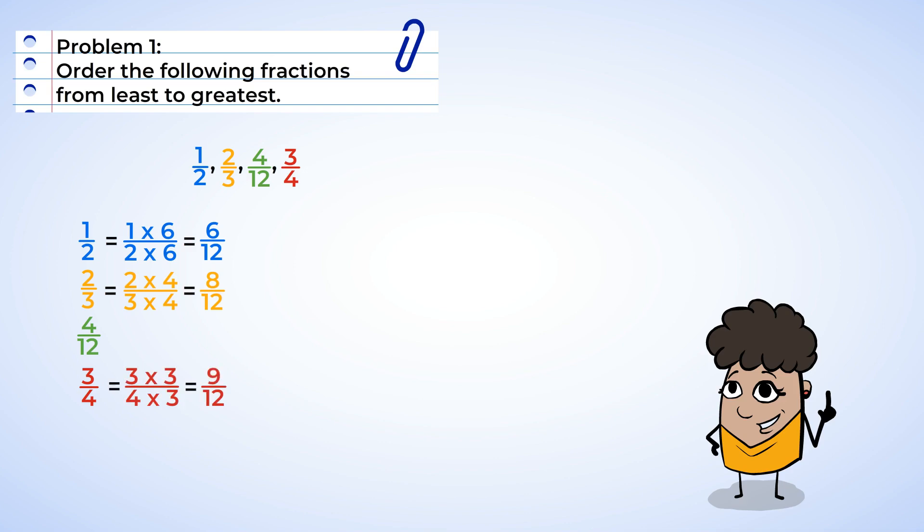Now that all of our fractions have the same denominator, we can compare the numerators. Now let's order the numerators from least to greatest. Four, six, eight, and nine.